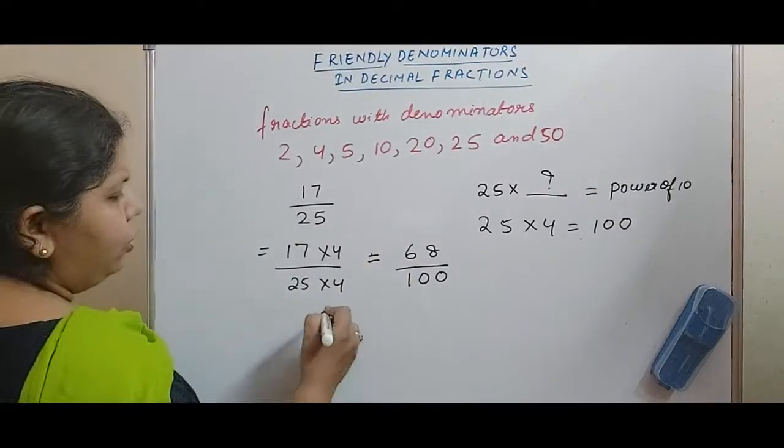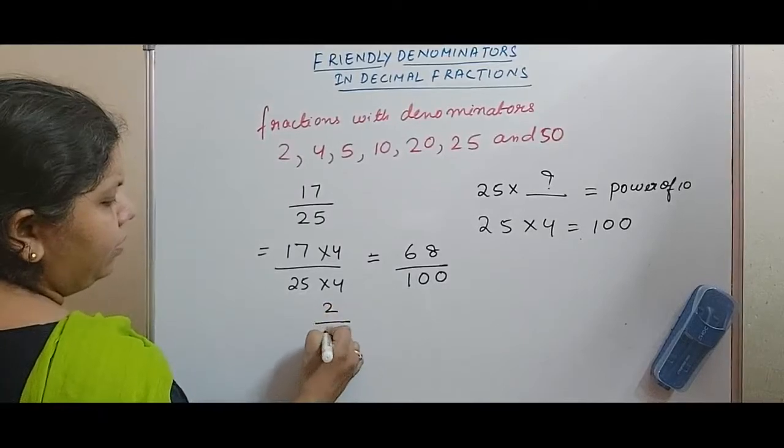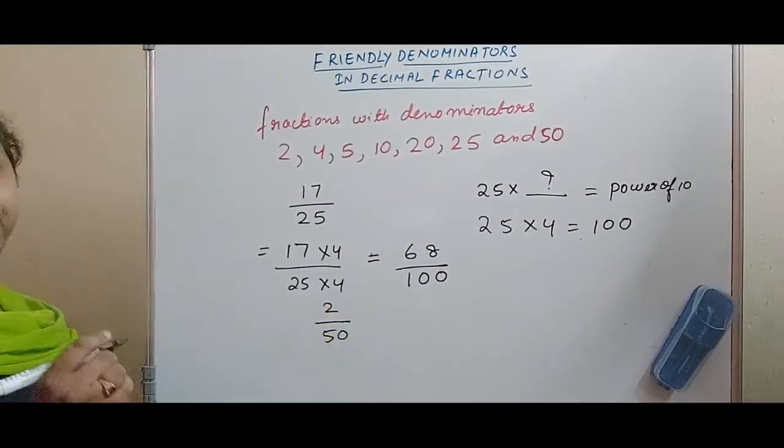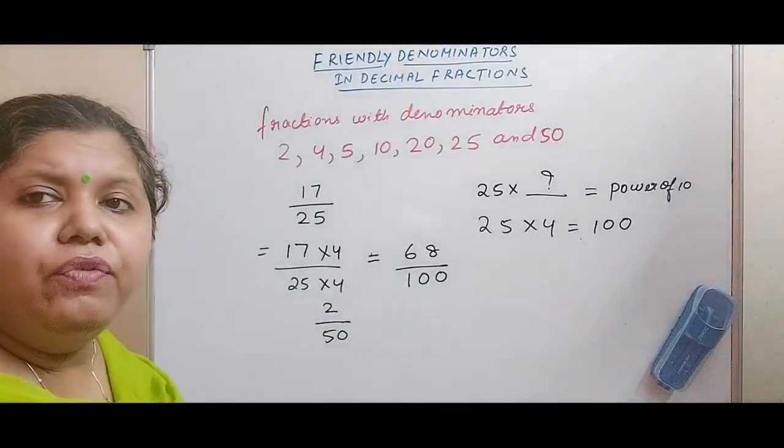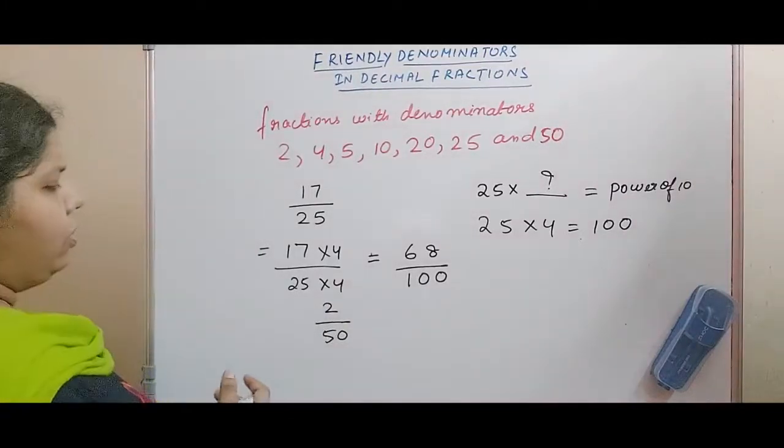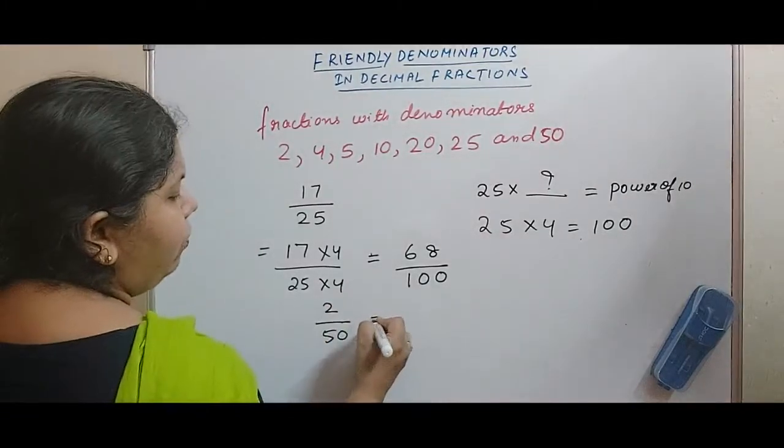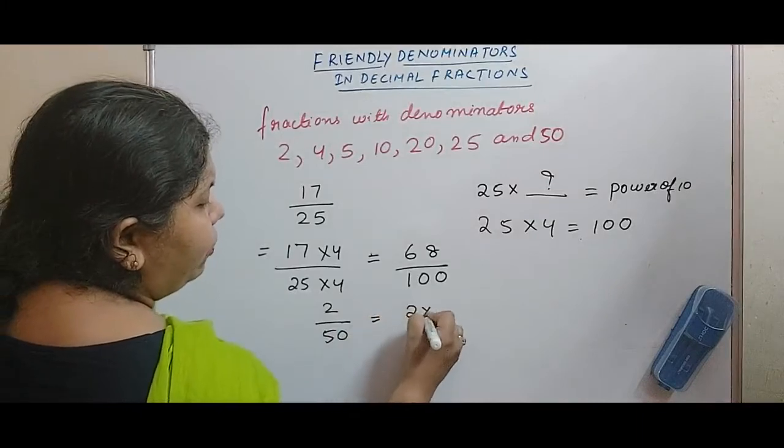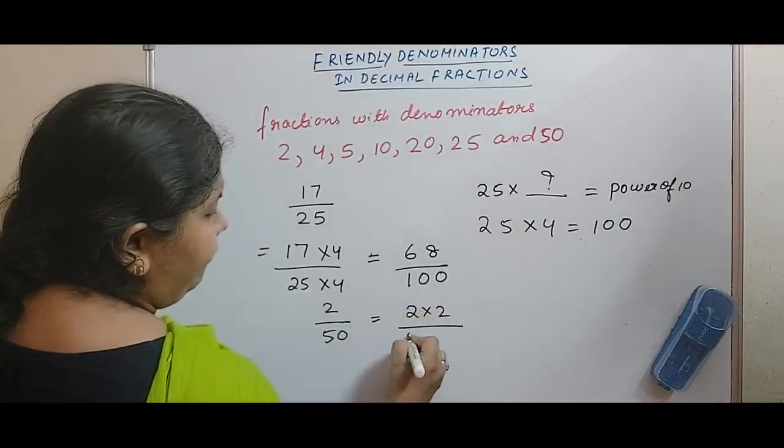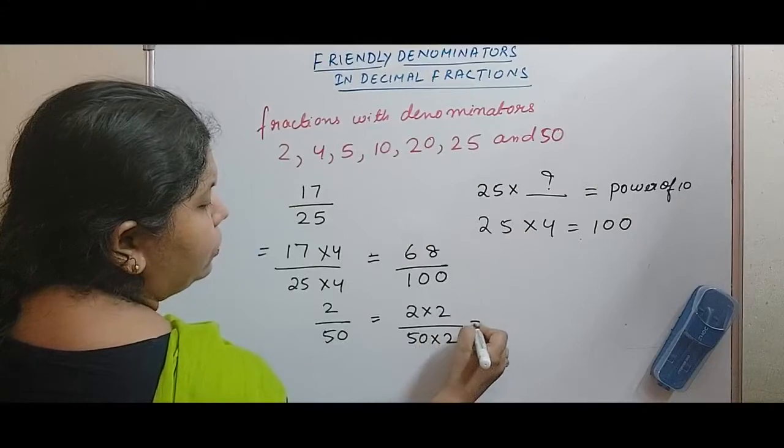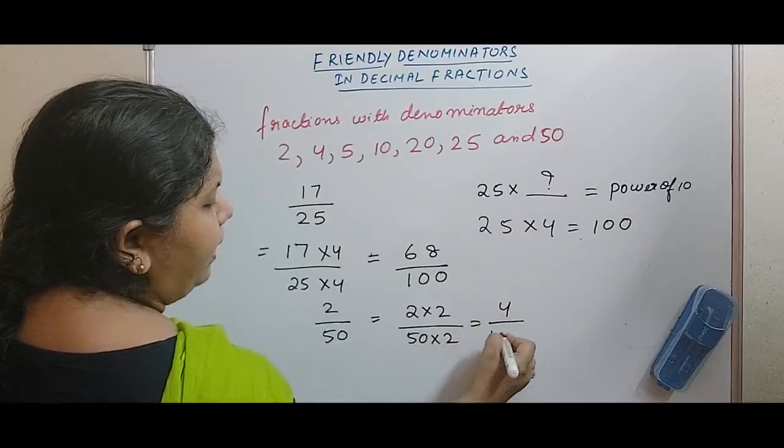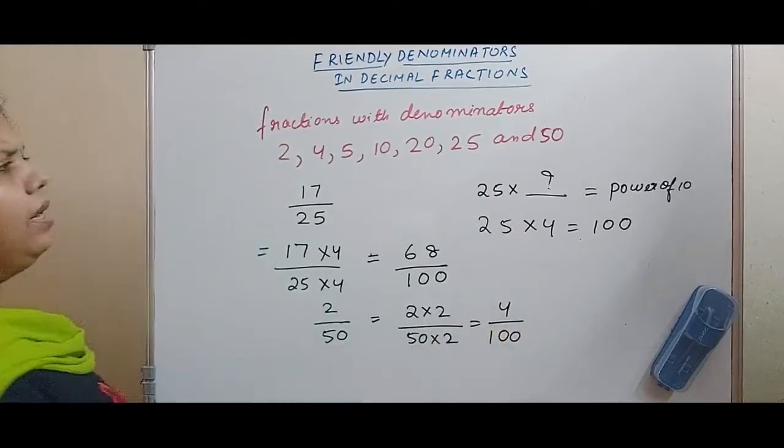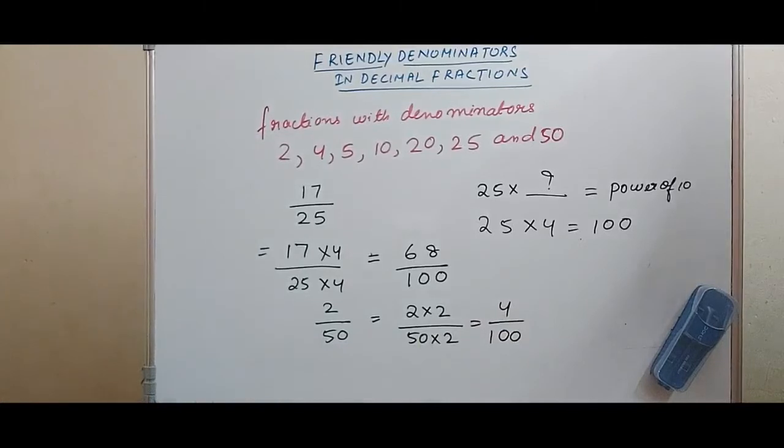Another example. Suppose it is 2 by 50. Now we know that 50 can be multiplied with 2 to get 100, yes or no? So what we will do? 2 into 2 by 50 into 2. So this gives me 4 by 100. This is again a decimal fraction.